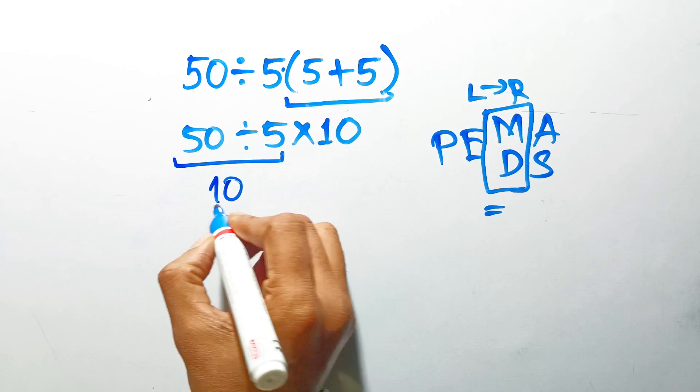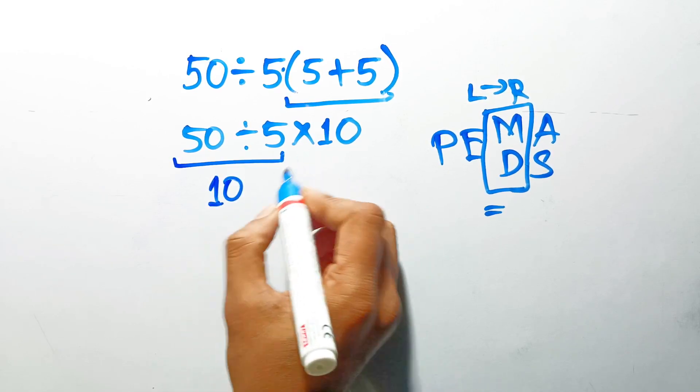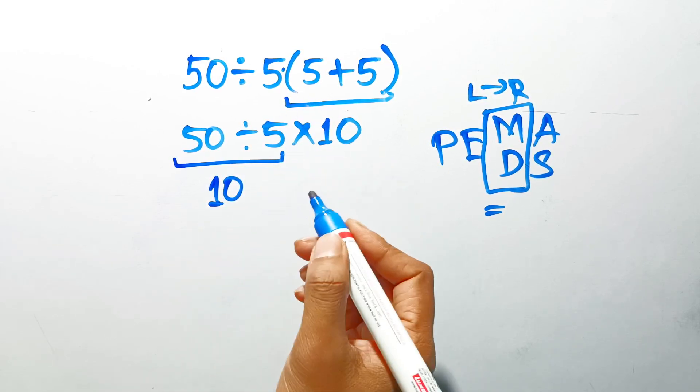50 divided by 5 gives us 10. If we had done the multiplication first, we would have been left with 1, which is incorrect.